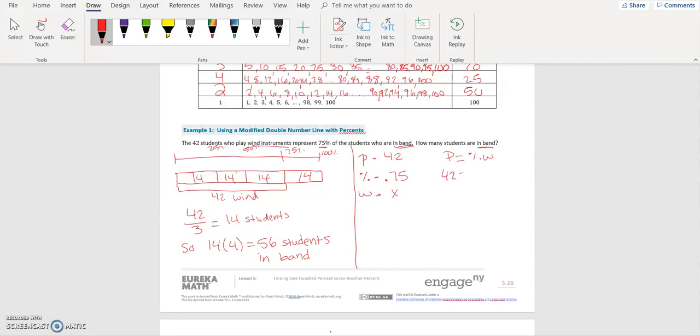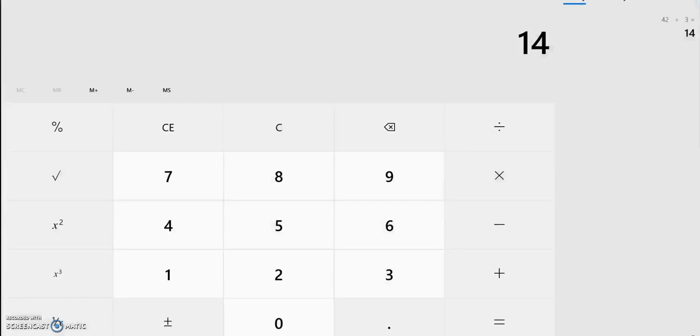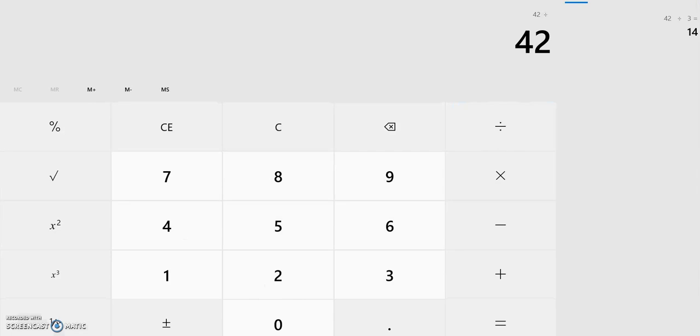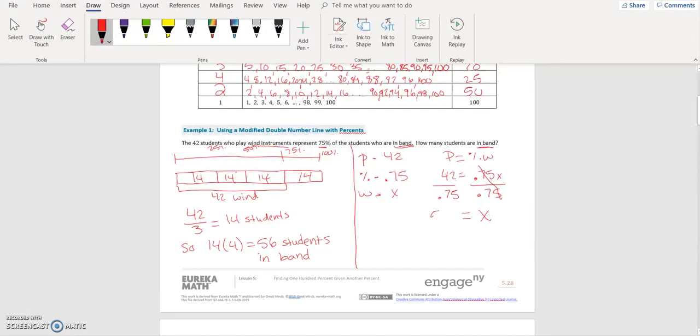So write your equation. Part is equal to percent times the whole. P is 42, is equal to percent is 0.75, and your whole is going to be x. So we have the coefficient in front of the variable, and so that means we're going to divide both sides by 0.75. So 42 divided by 0.75 is equal to 56. So again, we have 56 students in band.